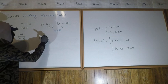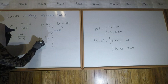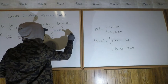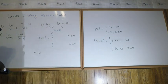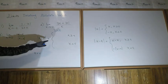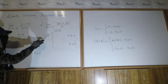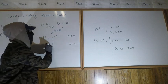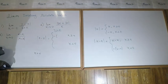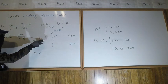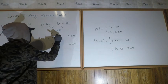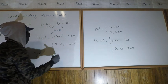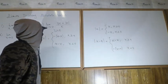Now for the absolute value of (4 minus x): setting the inside equal to zero again gives x equals 4, so it also breaks over 4. When x is greater than or equal to 4, plugging in 5: 4 minus 5 is negative, so we take the negative of the inside — giving negative (4 minus x). When x is less than 4, 4 minus x is positive, so the absolute value is just 4 minus x.